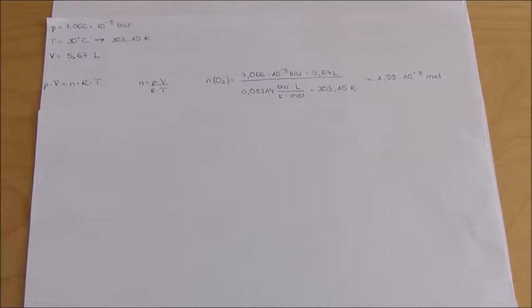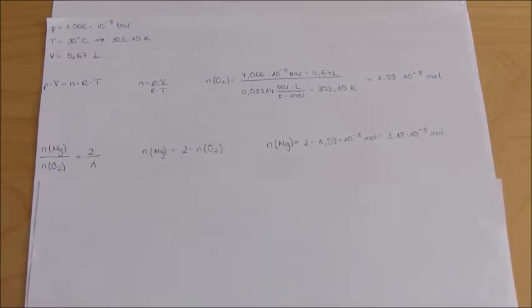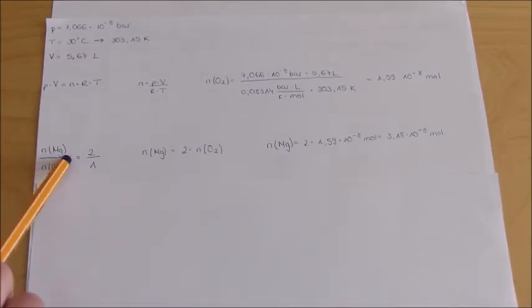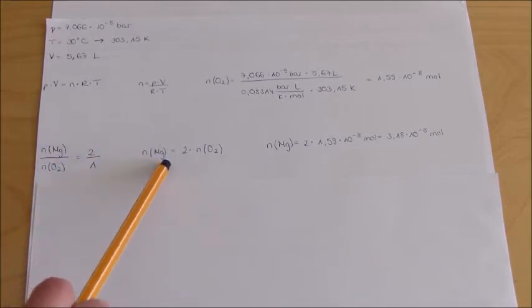To calculate the amount of substance of magnesium, we need twice the amount of O2. n(Mg) twice n(O2) once, so we need twice the amount of O2.